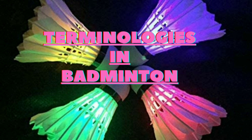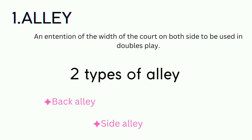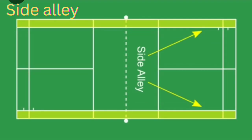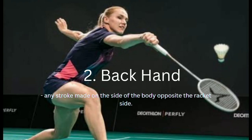There are many types of terminology. The first one is the alley: an extension of the width of the court on both sides, used in double play. And there are two types of alley — back alley and the second one is the side alley.